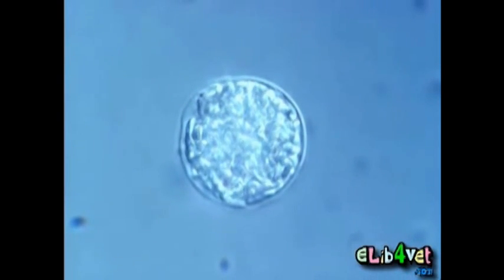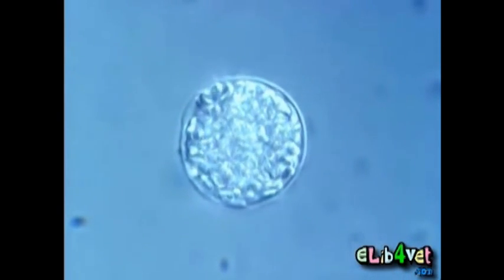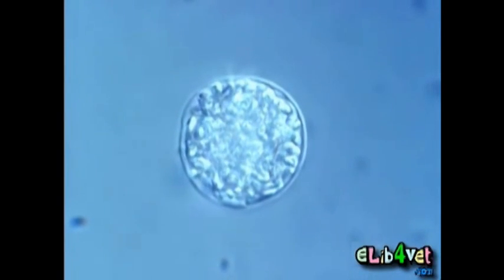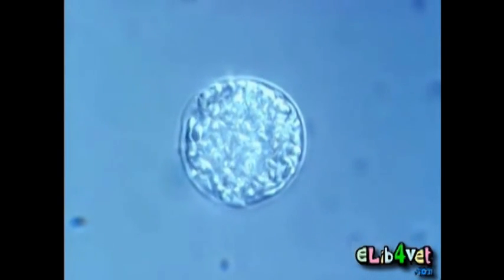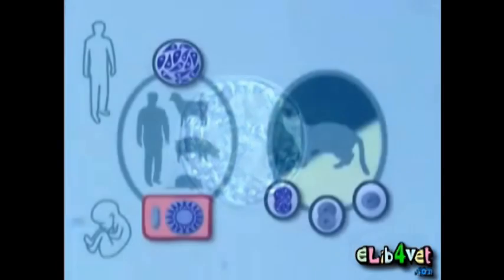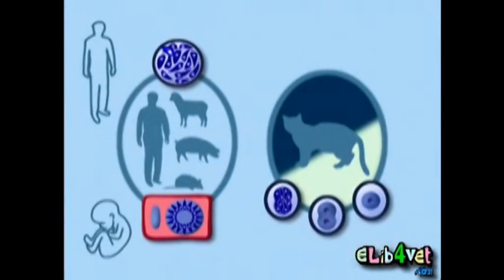However, when the host suffers immunodeficiency, such as in AIDS or upon organ transplantation, the infection can be reactivated. Bradyzoites can be released and switch back to the tachyzoite stage. This acute phase can be fatal in humans.